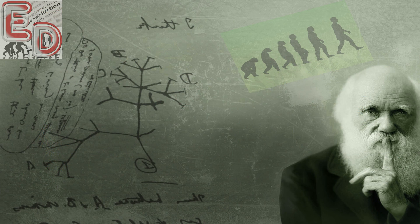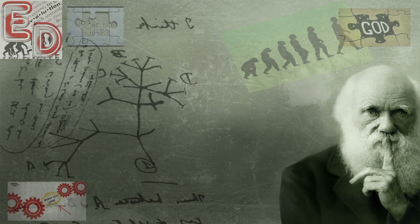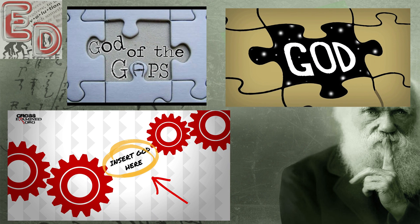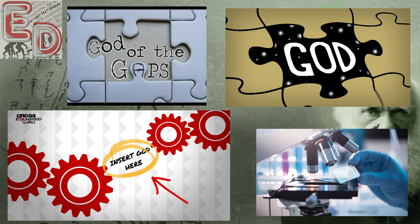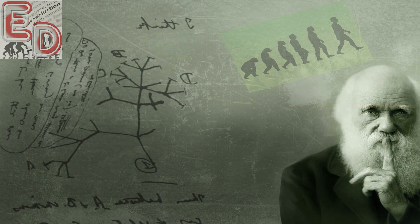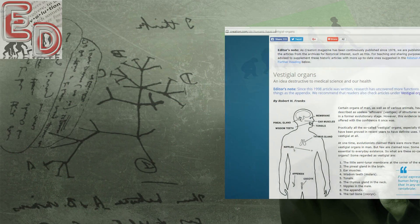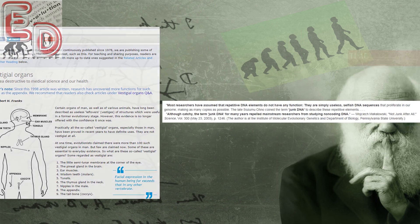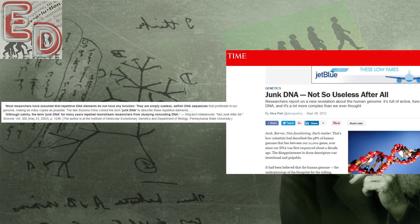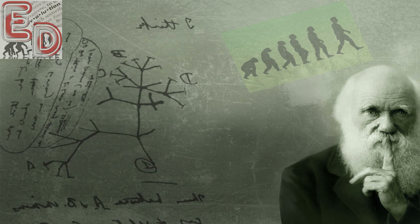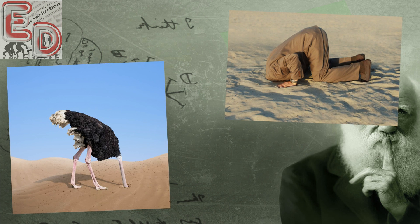Evolutionists love to say that creationists believe in a god of the gaps, meaning anything they don't understand they simply credit to God. Further, they say this is damaging to science because it discourages scientific pursuit to find answers for things we have yet to learn. In reality, it is evolution that is hurting scientific pursuit, with decades of vestigial organ and junk DNA claims causing well-meaning scientists to ignore entire systems as well as sections of DNA. Evolutionists were essentially saying, if we don't understand it, it doesn't have a purpose.